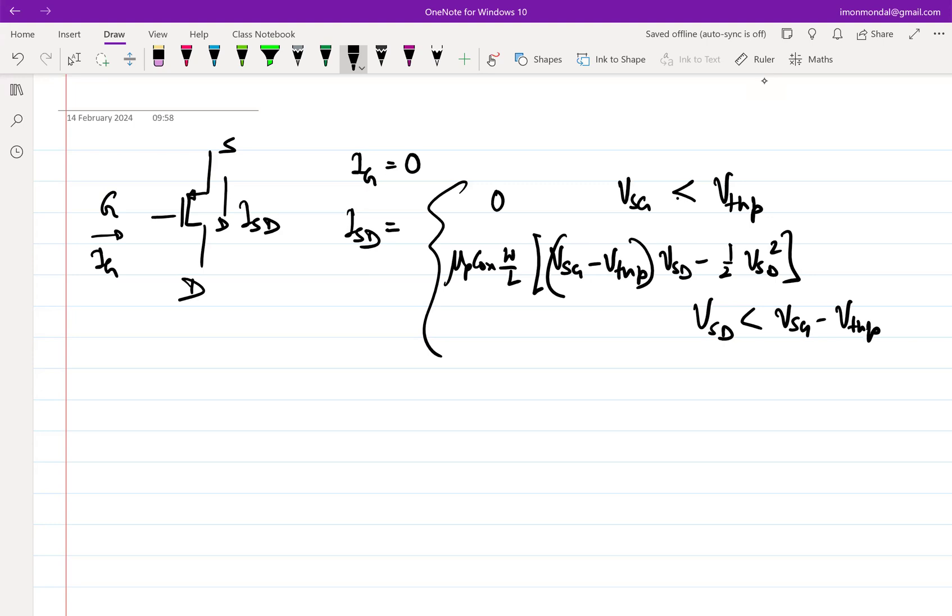What else? The third condition was the current is half mu P COX W by L VSG minus threshold voltage whole squared, right? So, this is under the condition that... when does it reach this condition? When do we reach this?